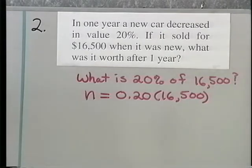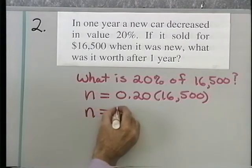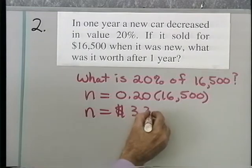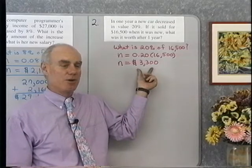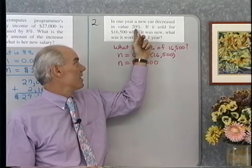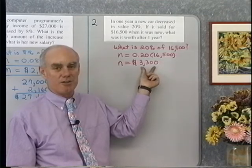let's see, 16,500 times 0.2 is equal to 3,300. So N is equal to 3,300. So that's the dollar amount of the decrease in value of this car because it decreased in value 20%, and 20% of 16,500 is $3,300.